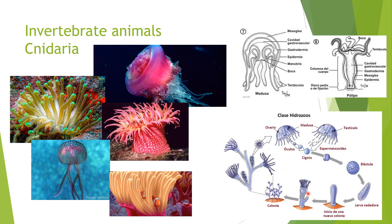All cnidarians are predators. They use the stinging cells to sting and kill prey, then bring it through the mouth into the gastrovascular cavity — in the jellyfish this is the mouth, and this is the gastrovascular cavity; in the polyp it works the same way. Inside, they carry out digestion and absorption to obtain nutrients, and then waste is eliminated back out through the mouth.